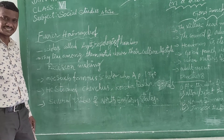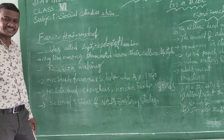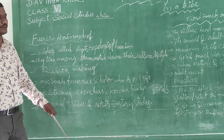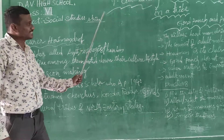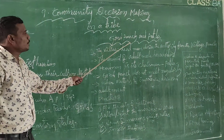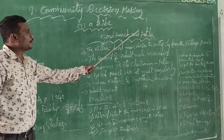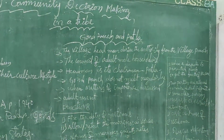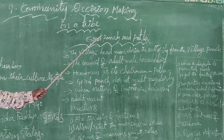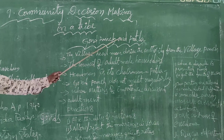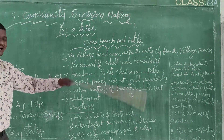Do you know, children, what are the northeastern states? There are seven northeastern states, and these seven northeastern states are also called the seven sisters. Now, coming to the next important topic: Gond Punch and Patla. What is Gond Punch? Who is Gond Patla?